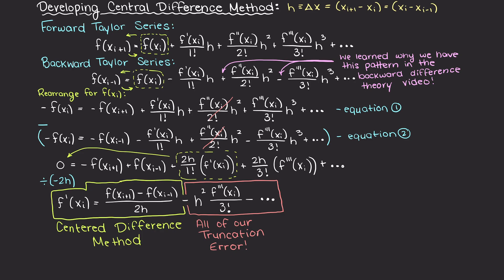But the important thing to note here is that the error is now proportional to h squared, therefore we have now just decreased our error without changing our step size as we had set out to do.